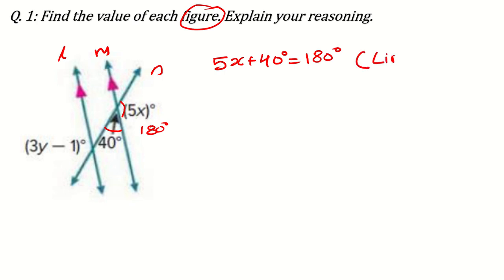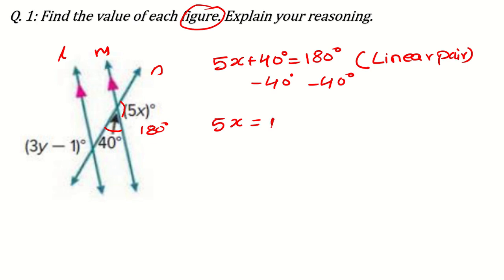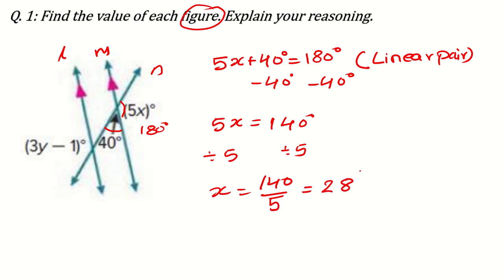Why? Because of the linear pair — they are part of the linear pair, so their sum will be 180 degrees. Now we simplify: subtract 40 from both sides, so 5x equals 140 degrees. Then divide by 5 on both sides, so x equals 140 divided by 5, which is 28 degrees. If they are asking for the angle, then 5x equals 5 times 28, which equals 140.